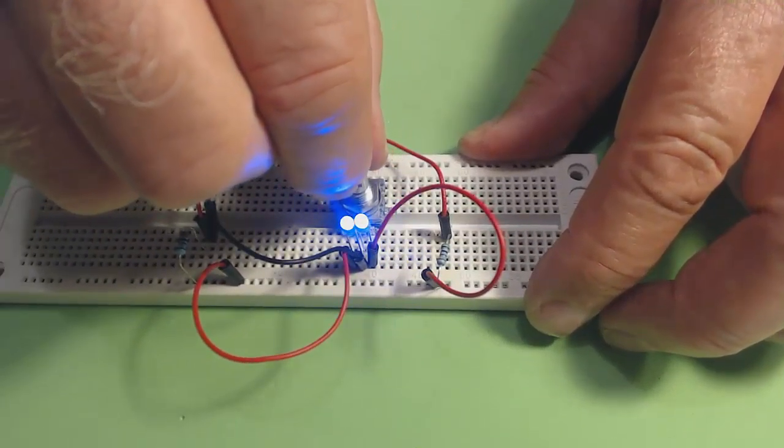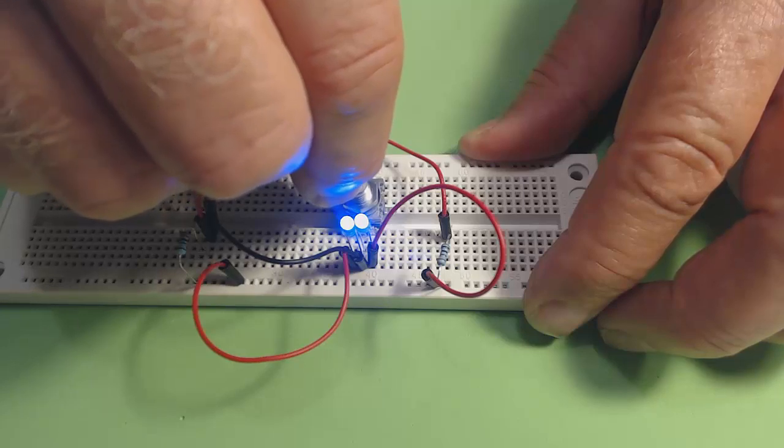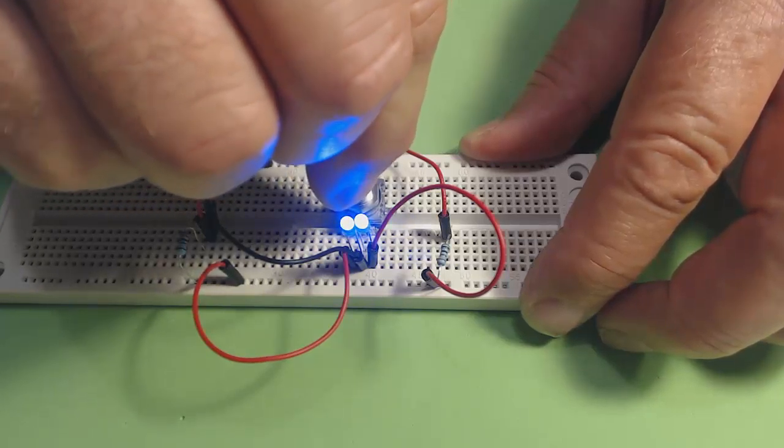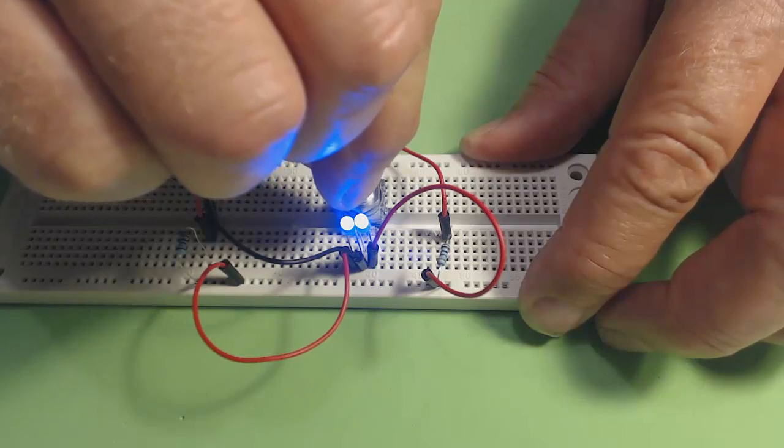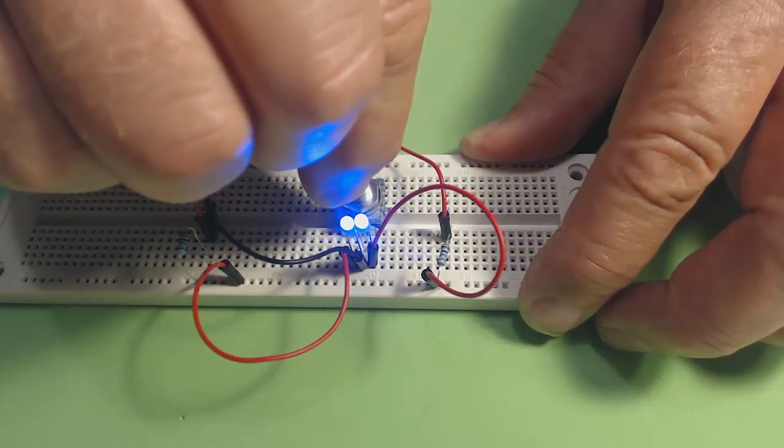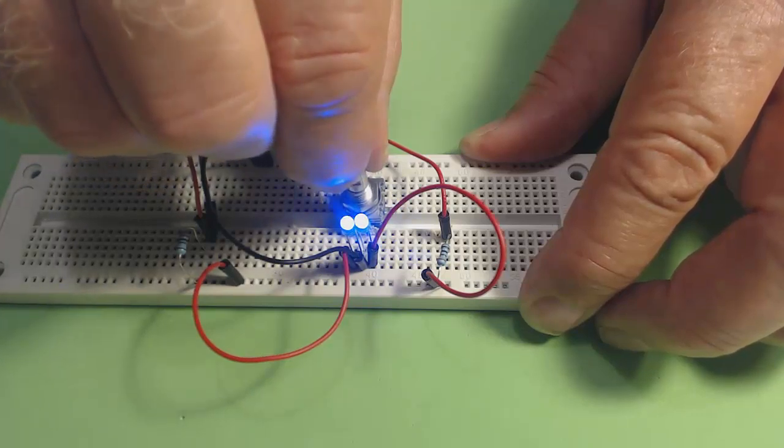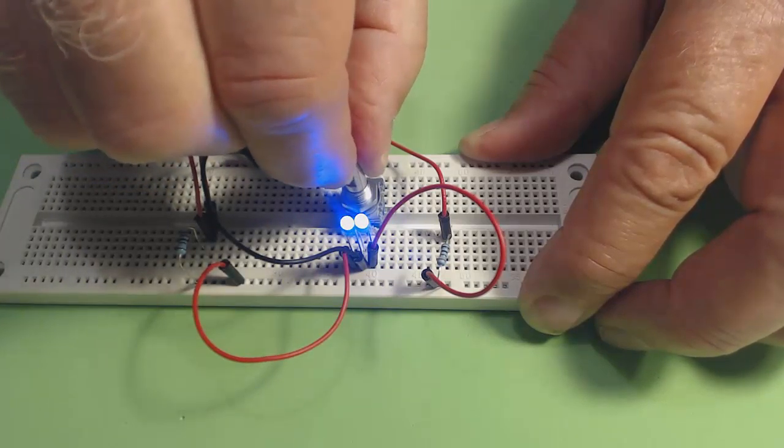Watch the LEDs as I slowly turn the shaft on the encoder. The first one turns off, then the second one turns off, then the first one comes back on, and then the second one comes back on. And when I turn the shaft in the opposite direction, they blink on and off in the opposite order.